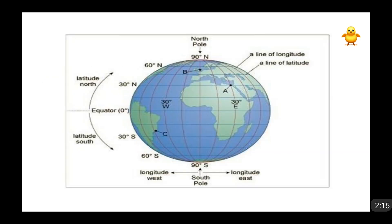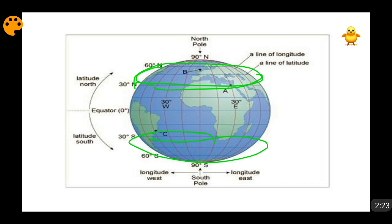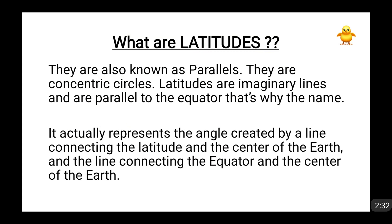Why concentric circles? You can see these latitudes going around and around, covering the whole surface of the earth. The equator goes around the whole circumference of the earth, so basically they are circles — parallel circles. Both latitudes and longitudes are imaginary lines. In reality, on the surface of the earth, there are no such lines. They are just imaginary and have been devised by humans.